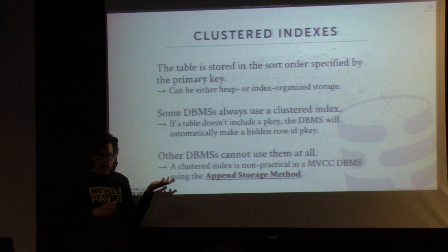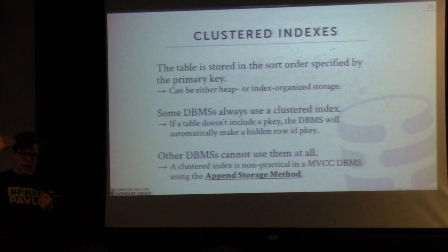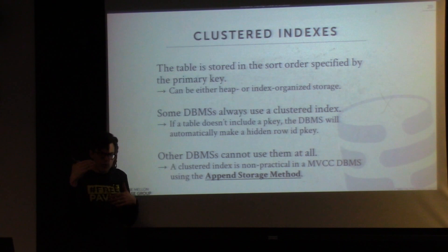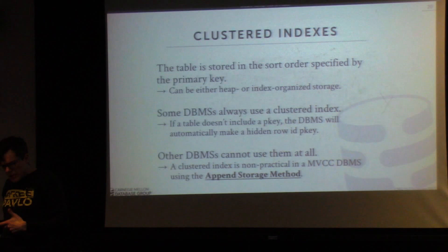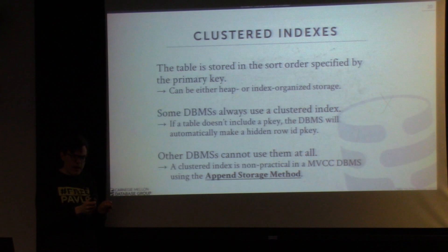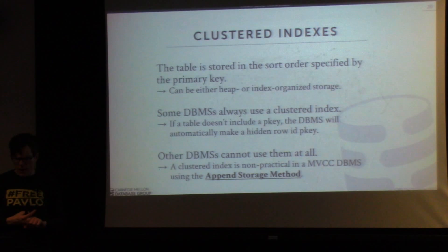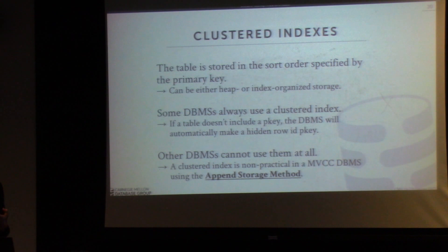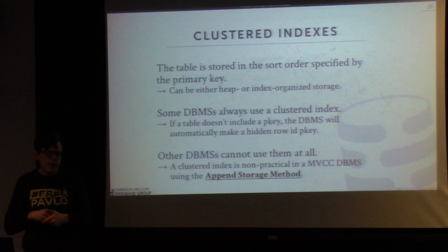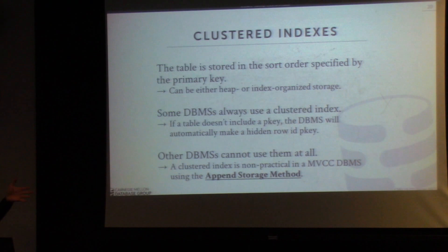Not all database systems can use clustering indexes. In Postgres, because it uses the append storage method in MVCC, any time you modify a tuple, a new version gets appended to the end. It'd be very difficult to maintain a clustering index and sort order across the entire table, since every update would require reshuffling everything. Postgres does have a cluster function to force sort as if you had a clustering index, but it's not permanent — as you update the table, things get out of order. Oracle exposes to the DBA whether you want an index-organized or heap-organized table, and the optimizer knows what optimizations to apply based on how the data is laid out.